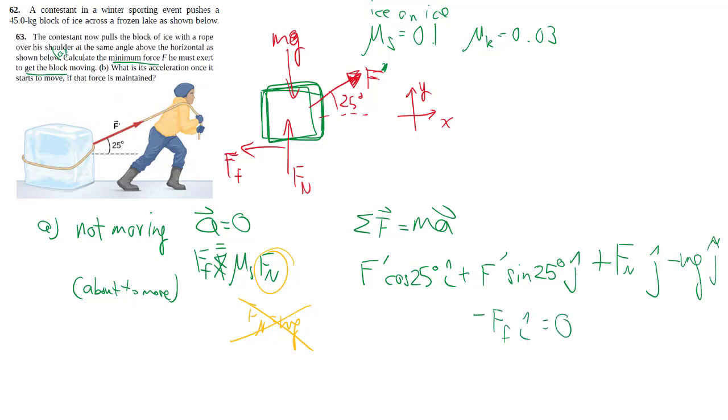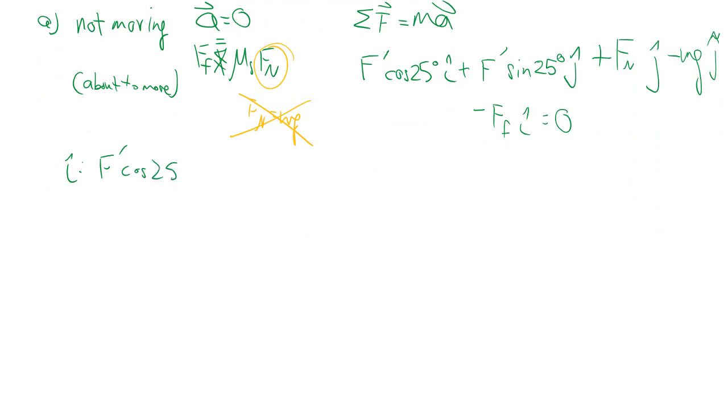Running off space a little bit. So if we rewrite this in i hat and j hat separately, we'll see neither of those we can solve right away because they both kind of have two unknowns. However, we can usually use one of them to solve for fn first, then sub in for ff. Looking at the j hat, you can solve for fn to be this.